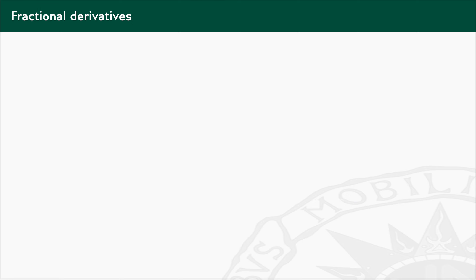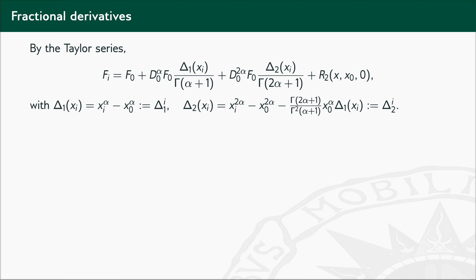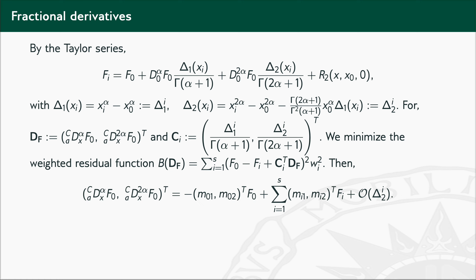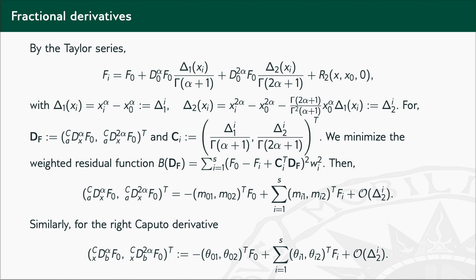In a very similar way, using the fractional Taylor series for the left Caputo derivative, if we minimize the corresponding weighted residual function with respect to D, we also arrive at the approximation of the fractional derivative as a linear combination of the solution at the surrounding points. In the same way, for the right Caputo derivative, we arrive at its approximation.